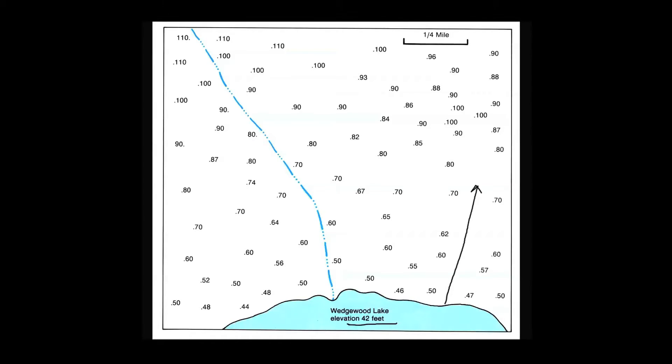Here's an intermittent stream shown with the dash pattern in blue, and we would expect that stream is flowing towards the lake. We can confirm that by looking at elevations. We've got an elevation of 50 feet here, and in this direction on the stream, the elevations get higher and higher up to 100 feet. So that's one general observation.